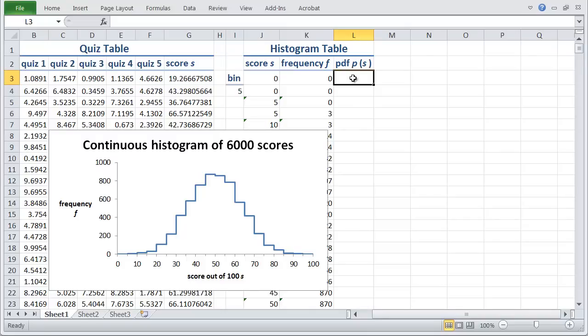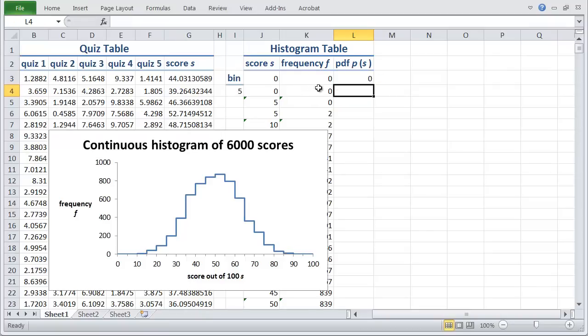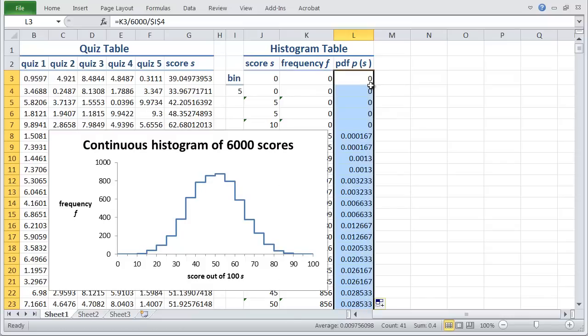So the way to do that is it's just equal to the value of the frequency and we need to divide by the number of samples that we took which is 16 and we also need to divide by the width of the bin which in this case was 5 so I need to click on that and hit the F4 key to make it an absolute reference and then hit enter and of course that doesn't look very useful because it's just zero so I'm going to double click and fill in the whole table and what we can then do is talk about how to get this graph to be a probability density function graph.